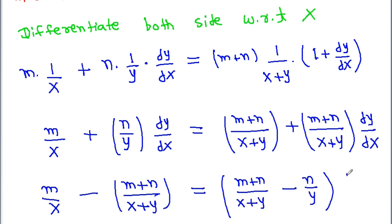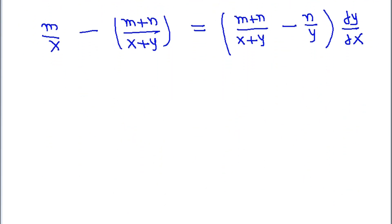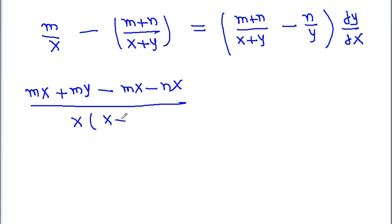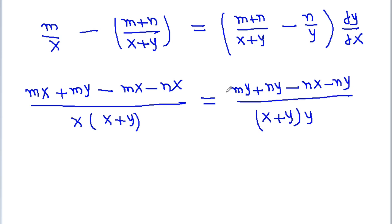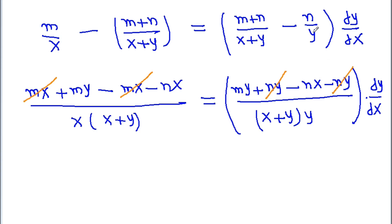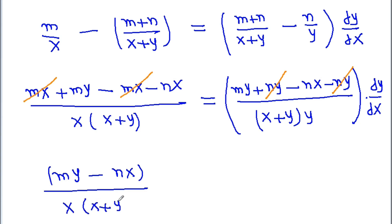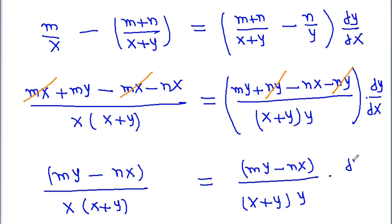Now here we get mx plus my minus mx minus nx over x times x plus y is equal to my plus ny minus nx minus ny over x plus y times y, whole multiplied by dy by dx. Here mx and minus mx will get cancelled, and ny and minus ny will get cancelled, leaving my minus nx over x times x plus y is equal to my minus nx over x plus y times y times dy by dx.